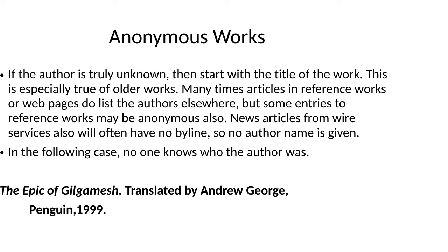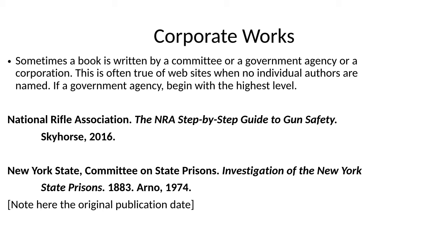Sometimes a book — or also true of web pages — is written by a committee, government agency, or corporation. If a government agency, begin with the highest level. Here are a couple of books: one written by the National Rifle Association, A Step-by-Step Guide to Gun Safety — no specific author, so that's how it's stated. Also true of government documents, such as New York State Committee on State Prisons. Including the original publication date can be helpful to let the reader know it was a report done in 1883, even though it was reprinted 90 years later.